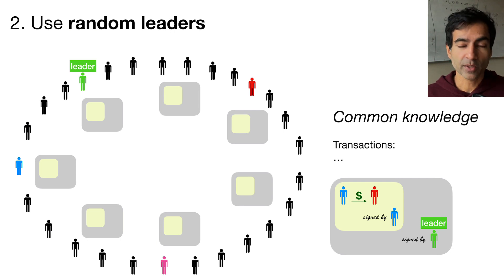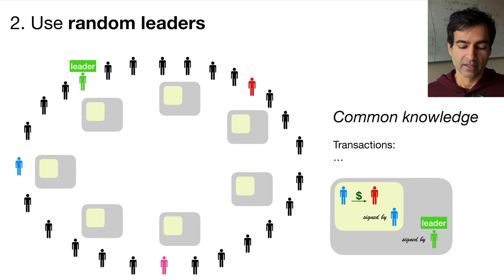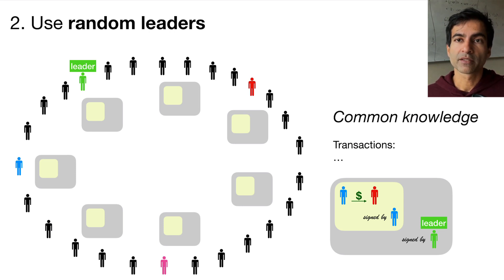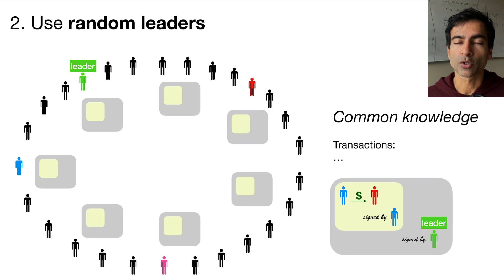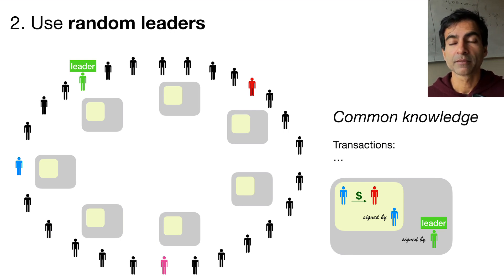Because we're choosing the leader at random, even if there's a small group of people trying to disrupt the entire system, eventually we will pick an honest leader — one who is trying to participate in the Bitcoin protocol correctly — and that leader will add the transactions they hear about to the common knowledge.